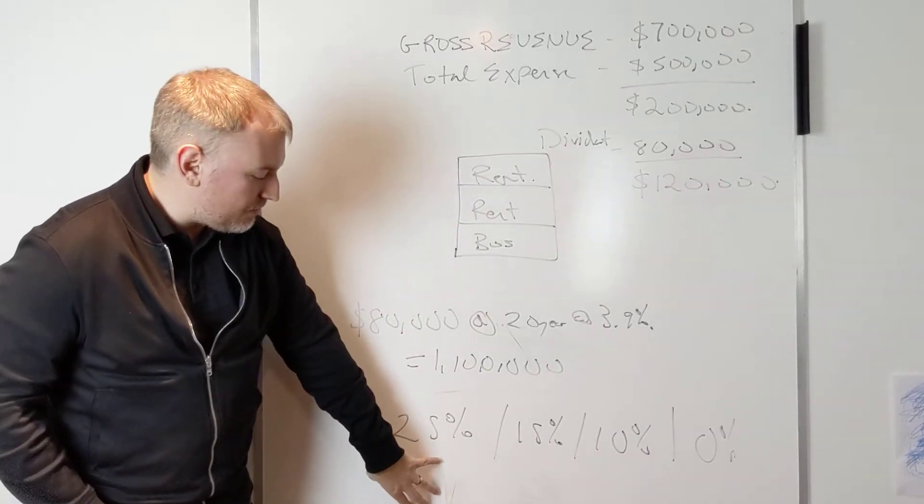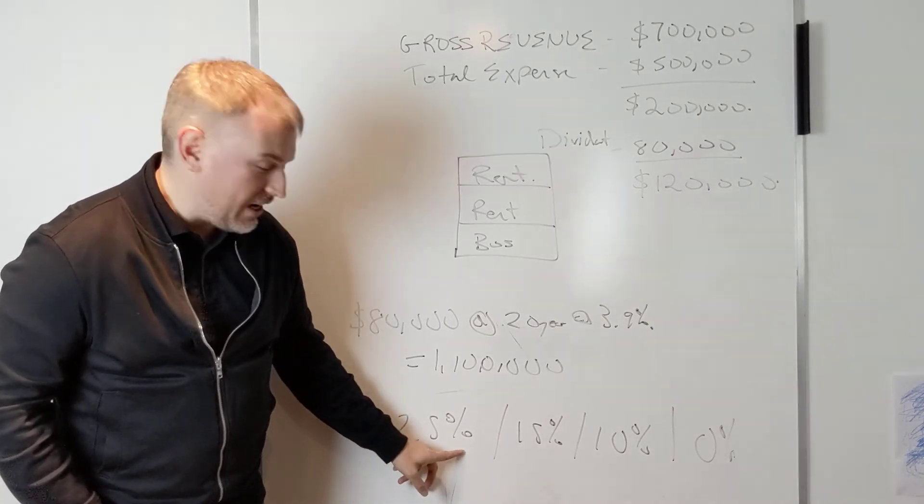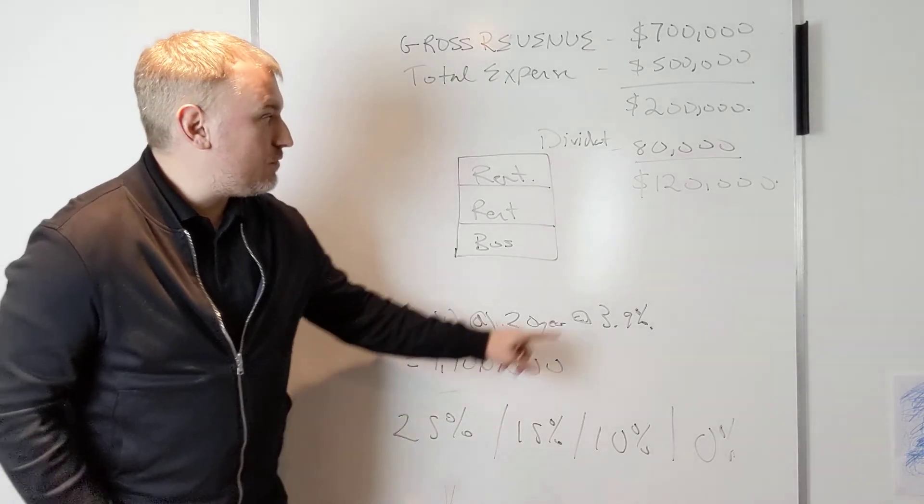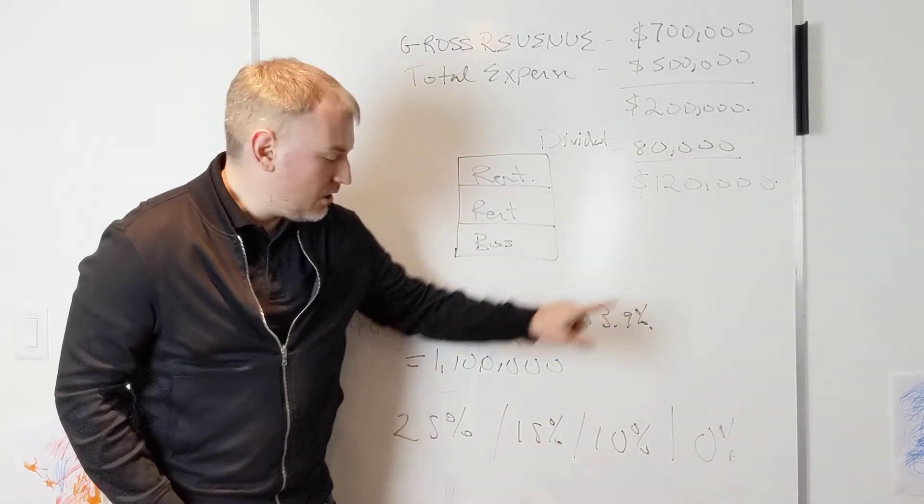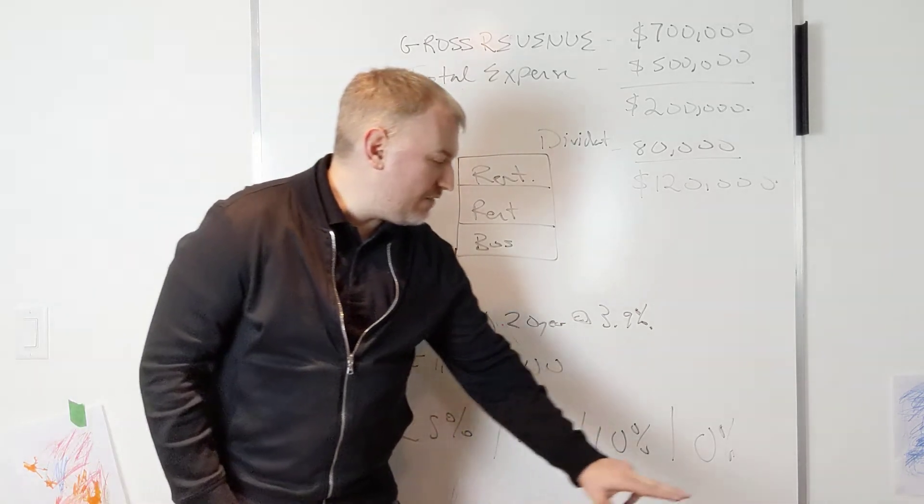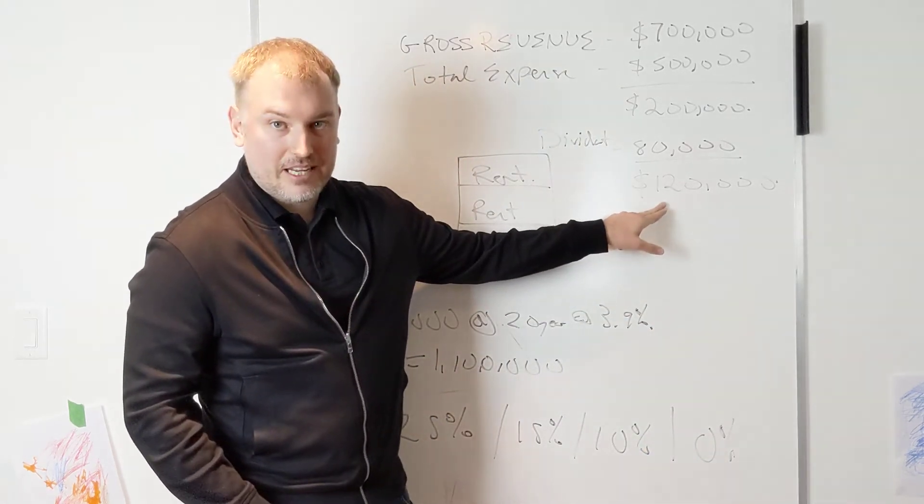So traditional financing basically says that you're buying commercial, as long as everything qualifies you're looking at 25% down, but it's possible if your corporation is super strong to buy commercial at 15% down, 10% down, and even 0% down depending on the strength of this company.